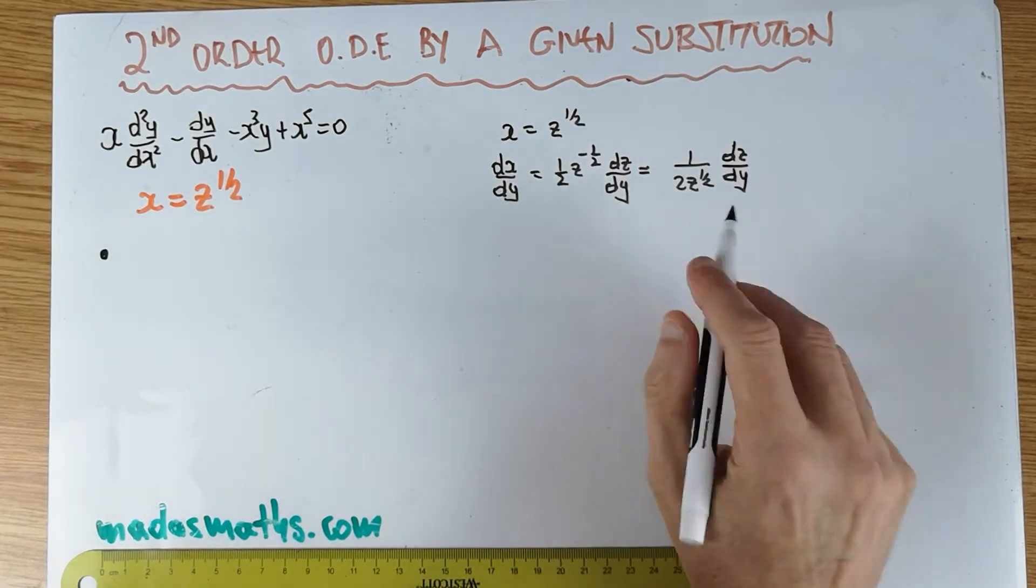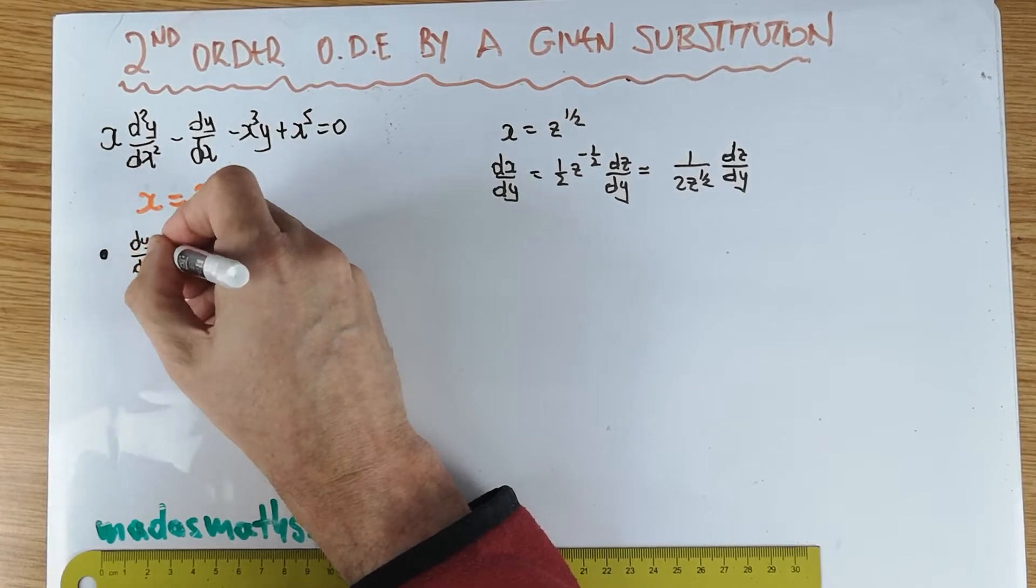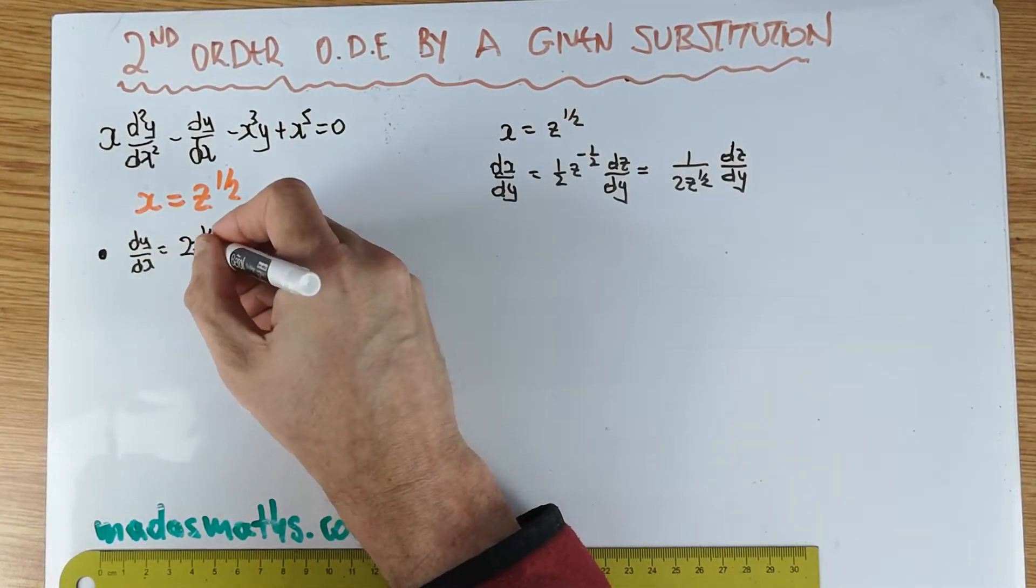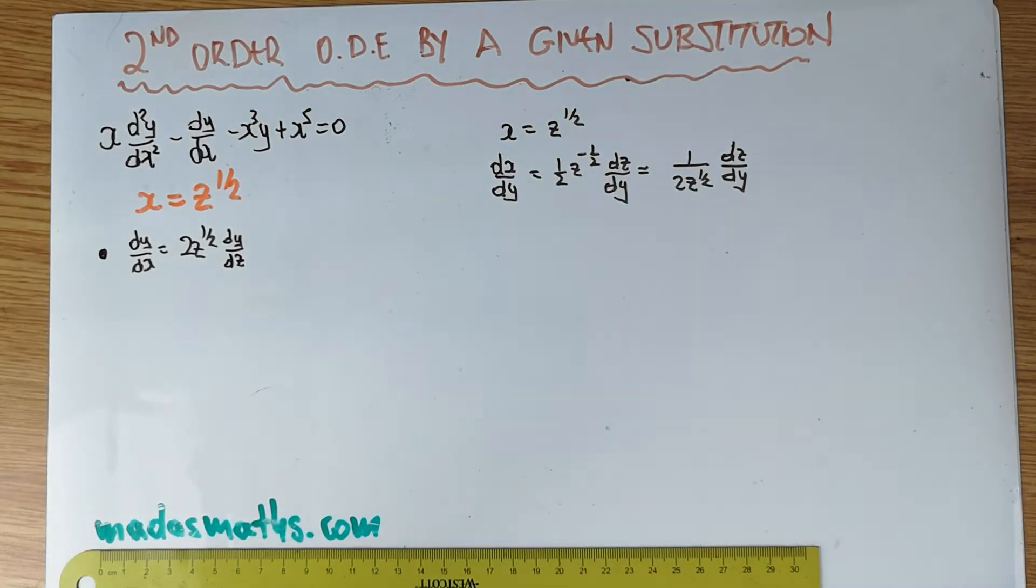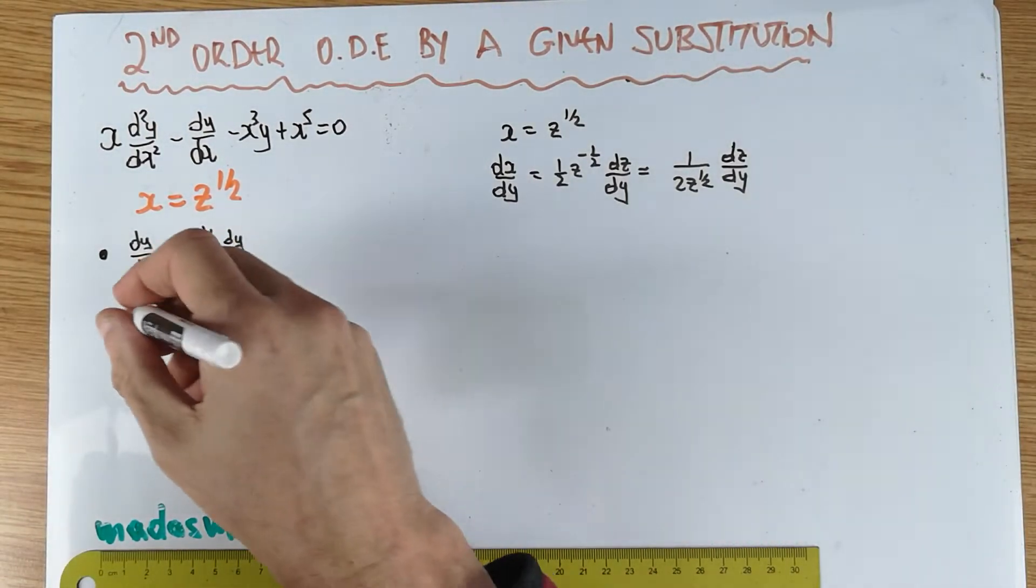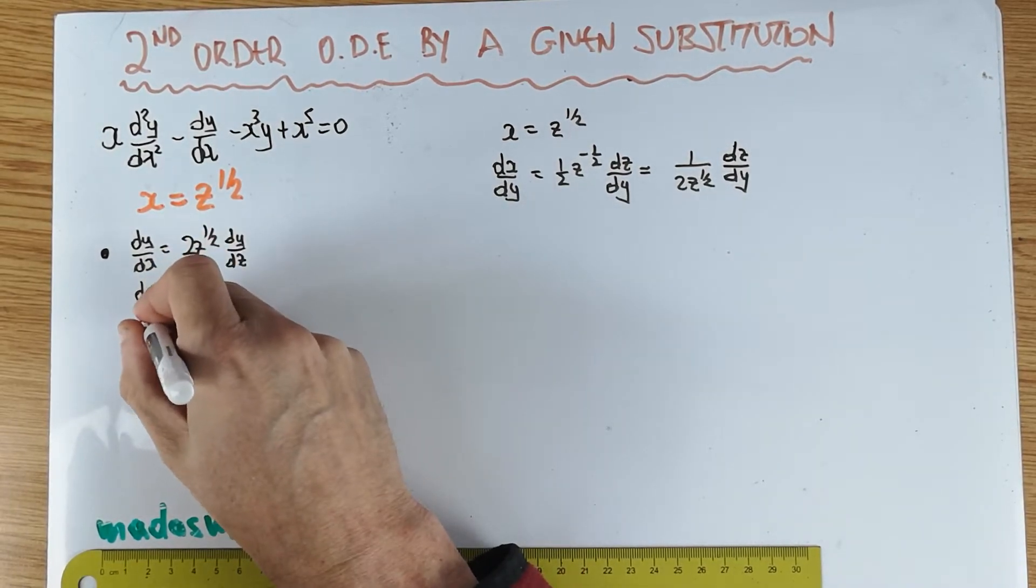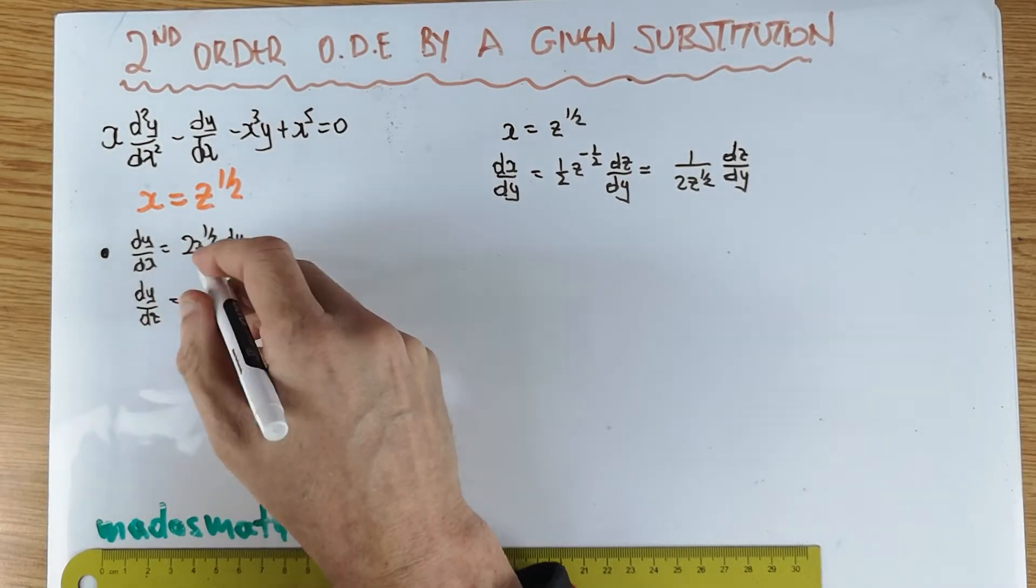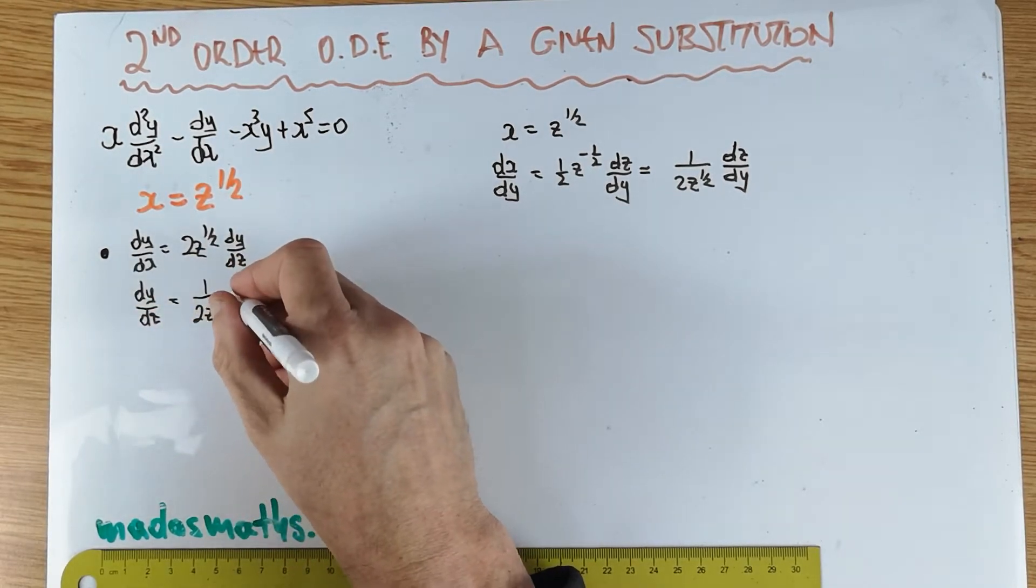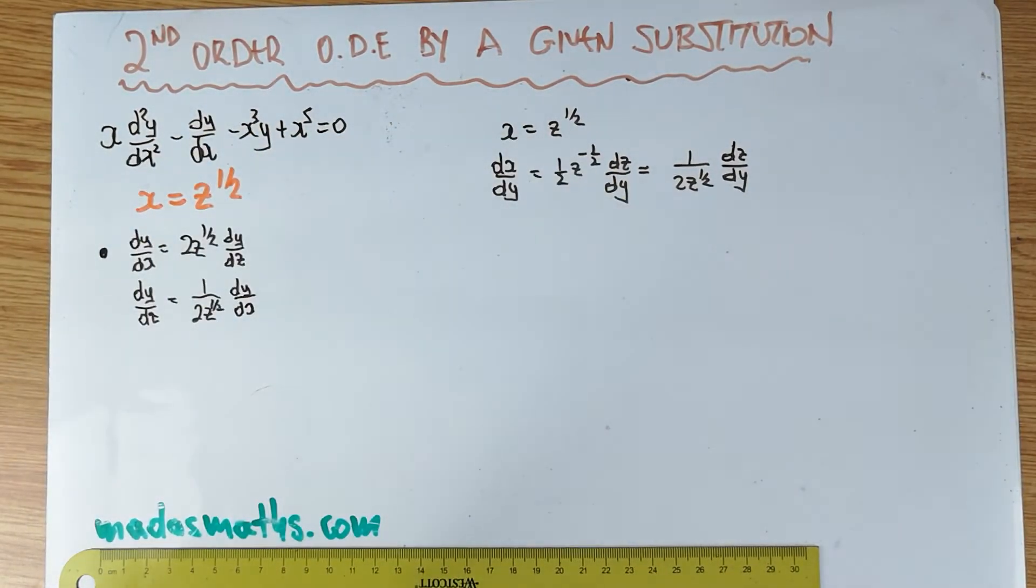I'm just taking care to write it properly. And then I'm going to flip it. So dy by dx, flipping that is going to be 2z to the half dy by dz. And I do apologize about my cough. It might be a good idea as well to actually rewrite this depending on how we need it within the workings. dy by dz is 1 over 2z to the half dy by dx. All I've done is I divided that across. So I've made this the subject.